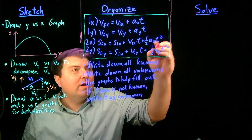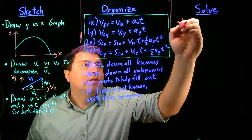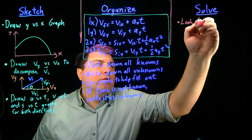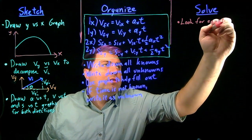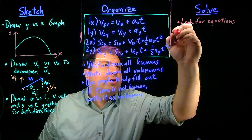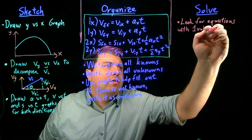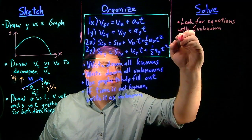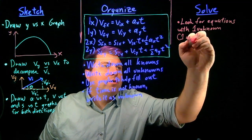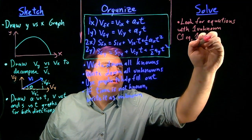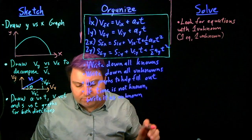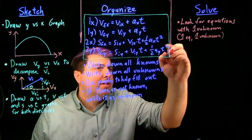Then as we solve, we want to look for equations with one unknown. This will give us one equation, one unknown.